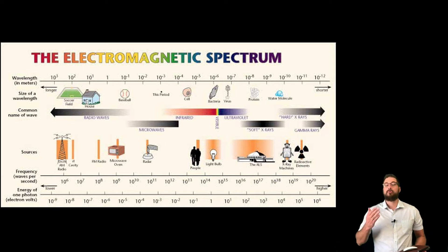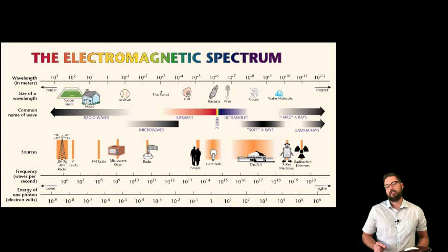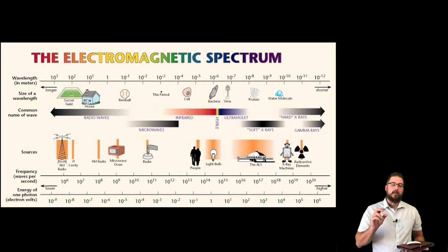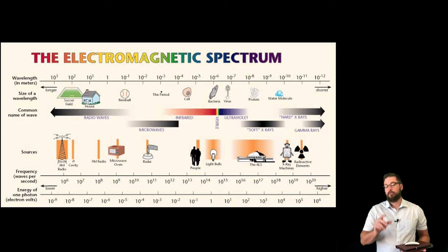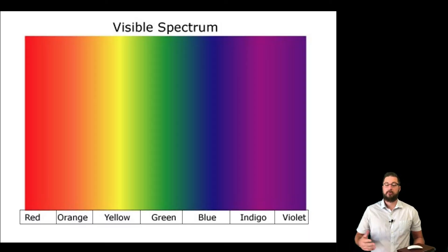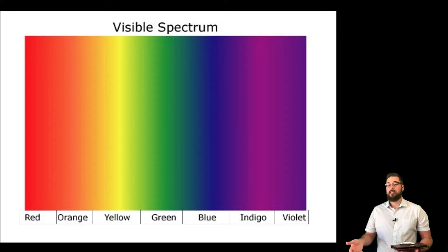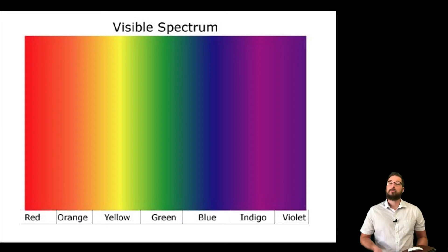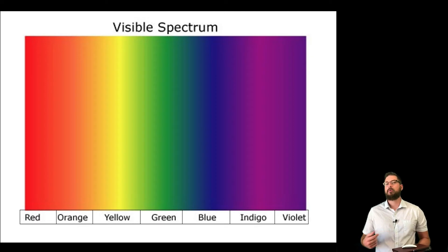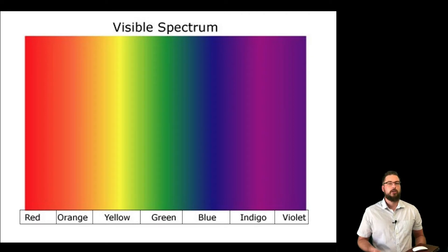We happen to be able to see a very, very thin part of the electromagnetic spectrum — the part we see is ROY G BIV: red, orange, yellow, green, blue, indigo, and violet. When we see purple or red, we're seeing photons of light hit our eyes. The only difference between red and violet is the amount of energy associated with those photons.